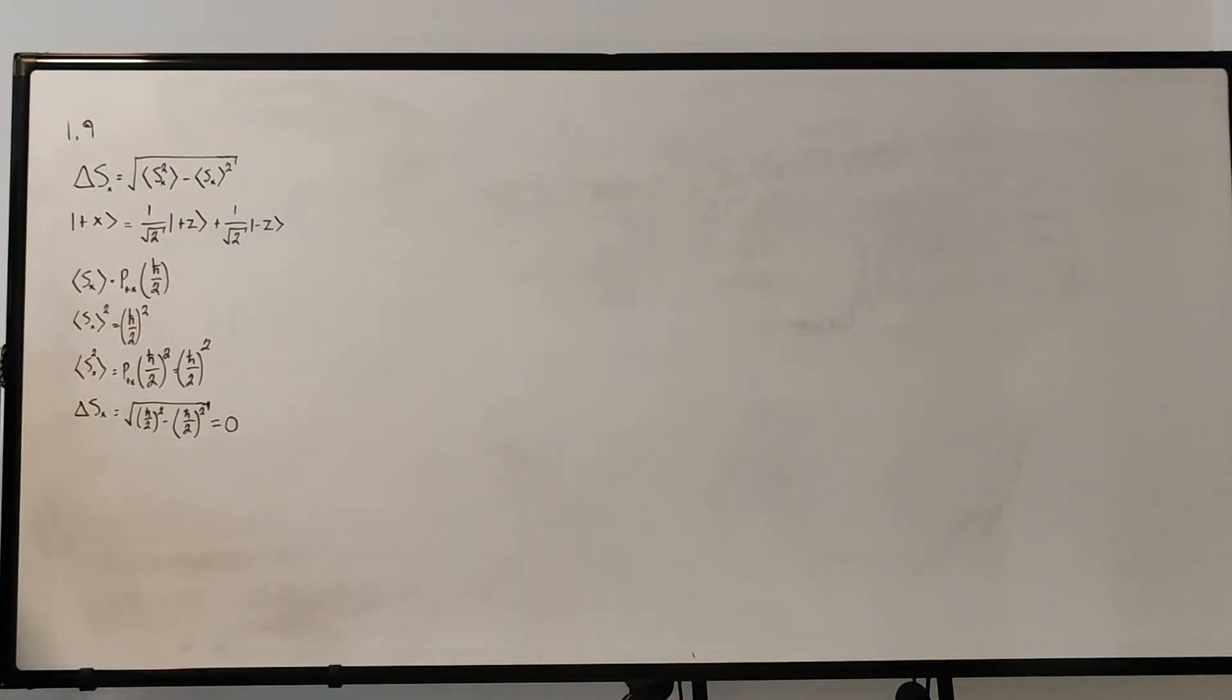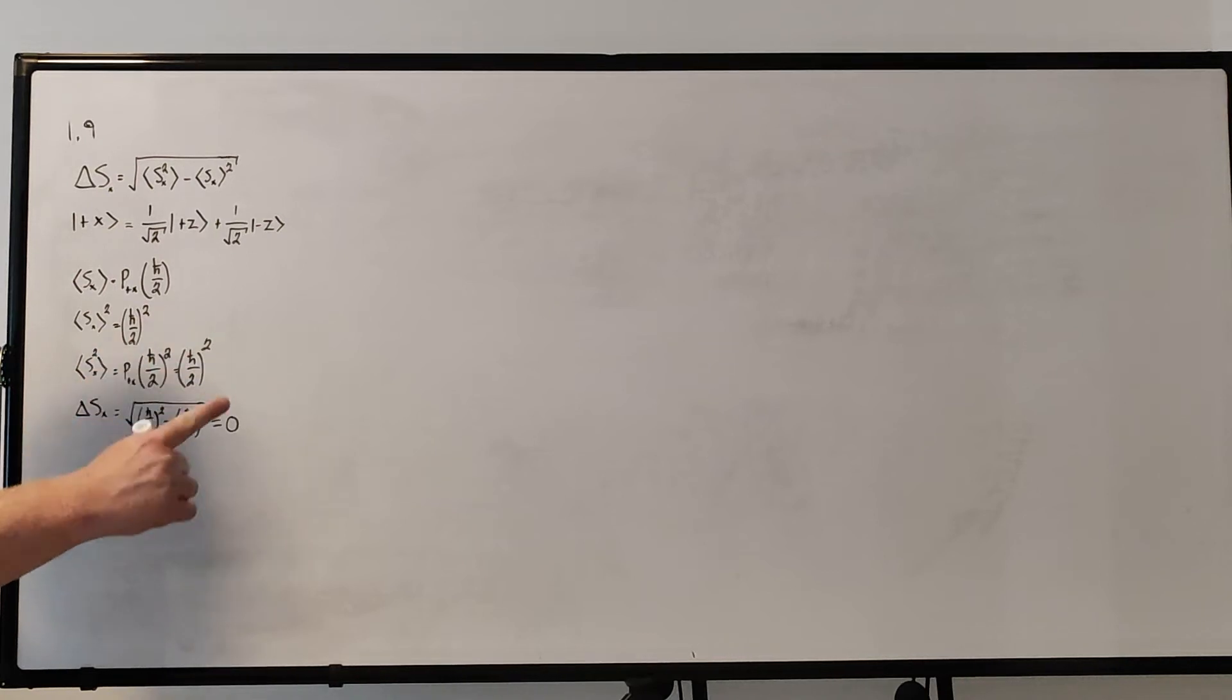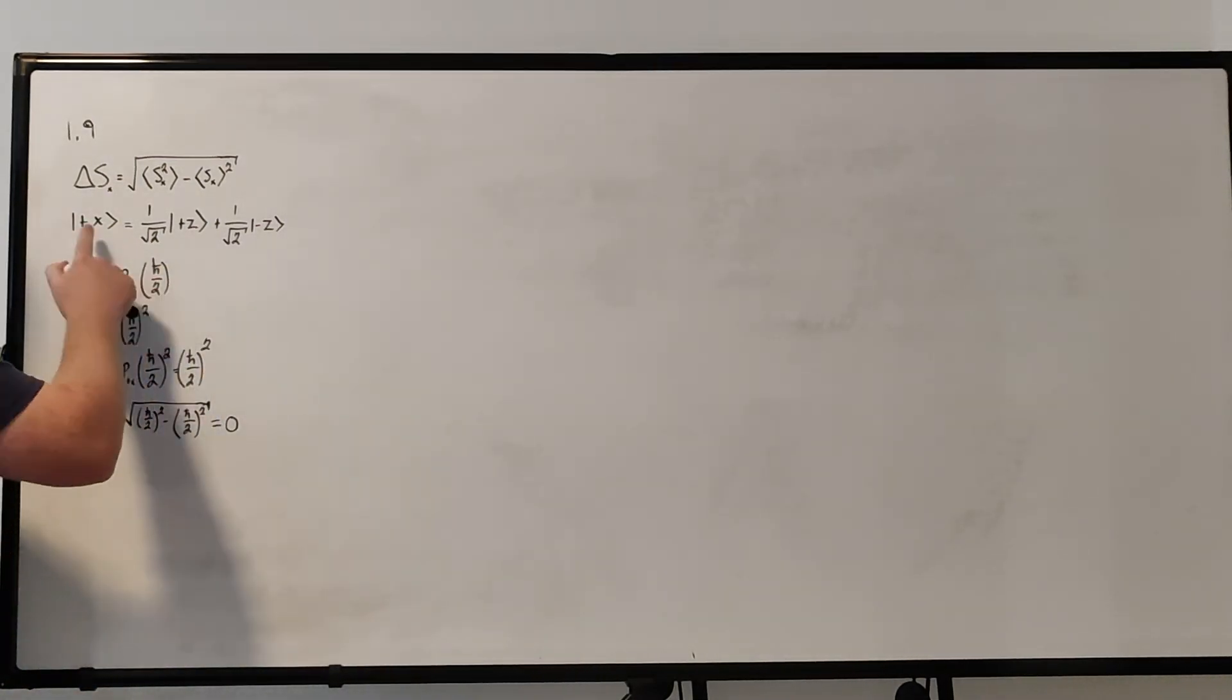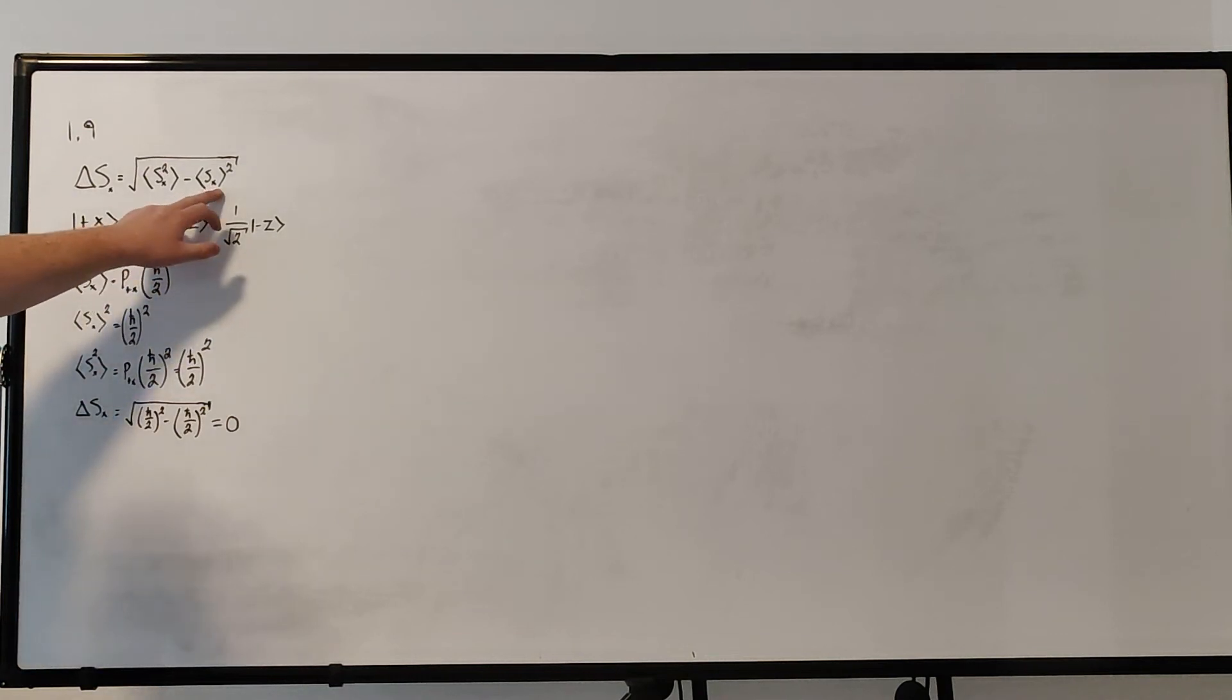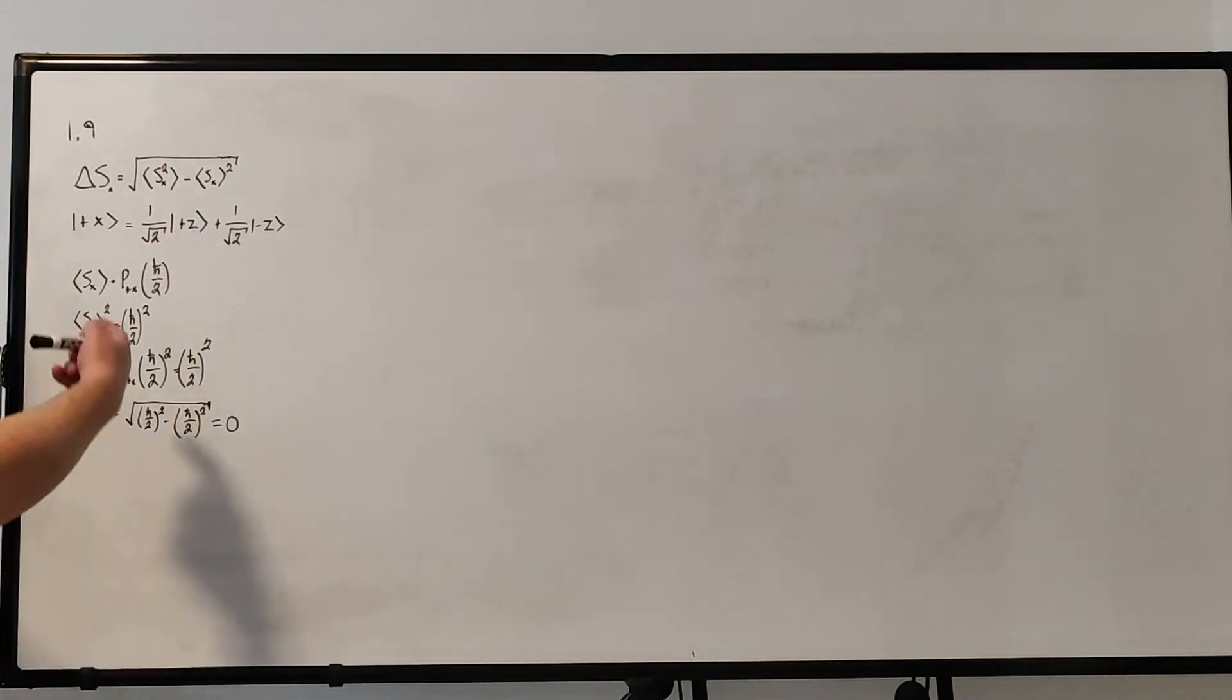So really the expectation value is just p sub plus x, which is the probability of measuring plus x, which is 1, because it's always going to be in the state plus x, times the value you measure, which for plus x is h bar over 2 positive. And then just taking the square of that, because that would be that second half there, we get h bar over 2 squared.